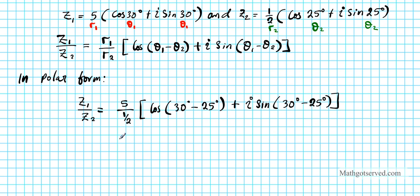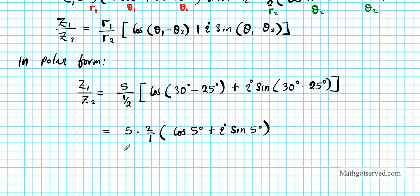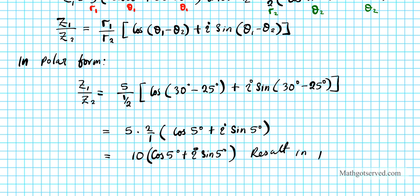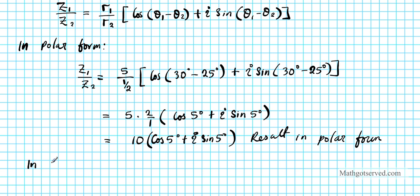Now let's multiply the radii: 5 times 2 is 10. So we have 10 cosine 5 degrees plus i sine 5 degrees. This is your result in polar form.